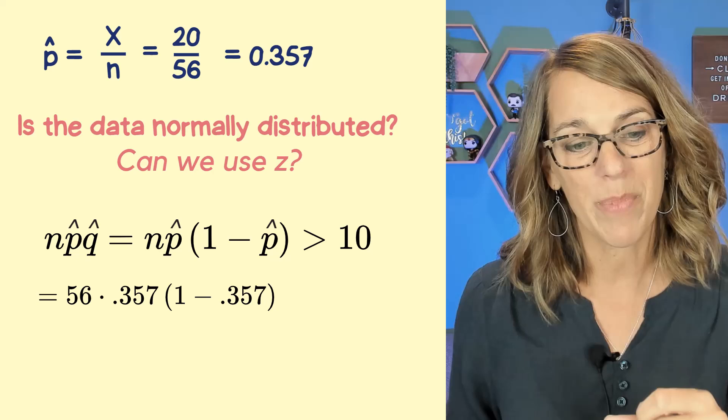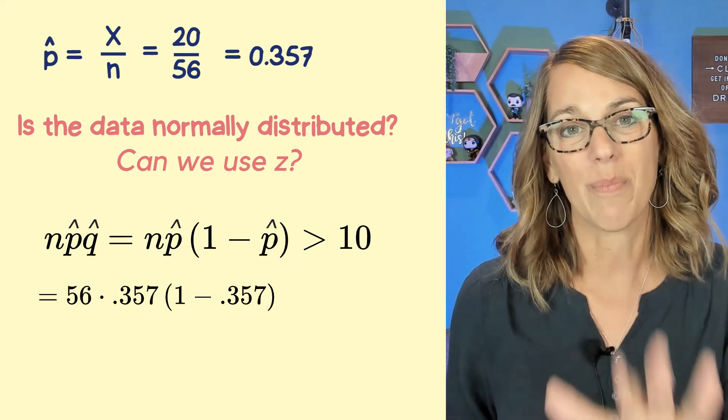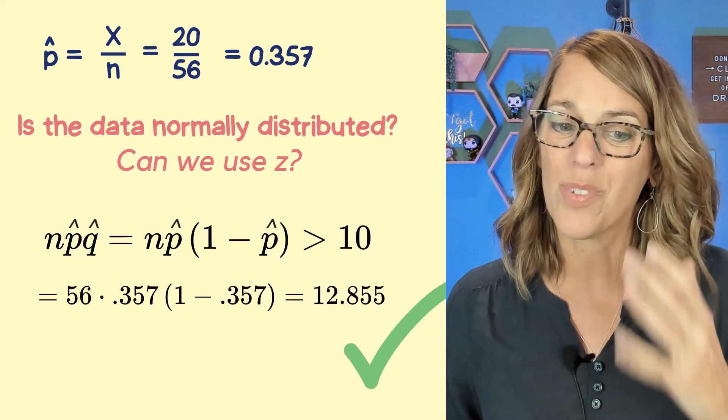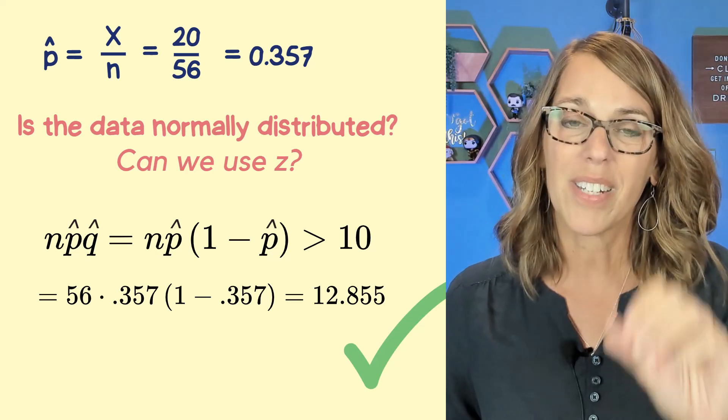Let's go ahead and put our numbers in. I threw that into my calculator and I came up with 12.855. So I can go ahead and use the Z statistic.